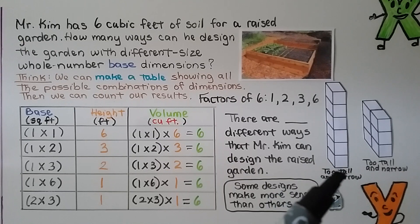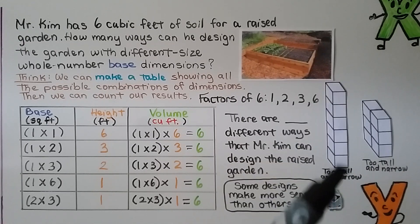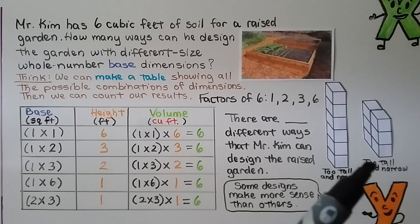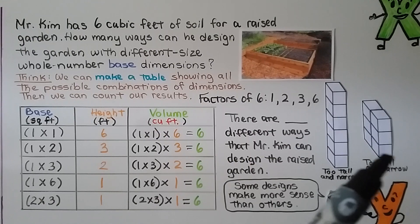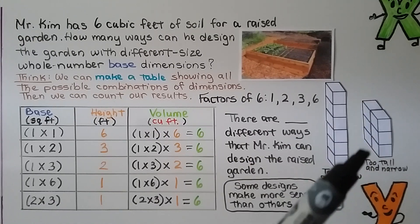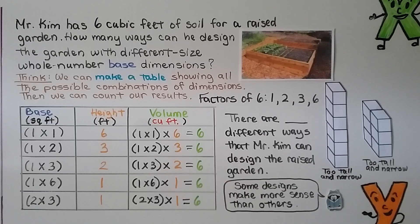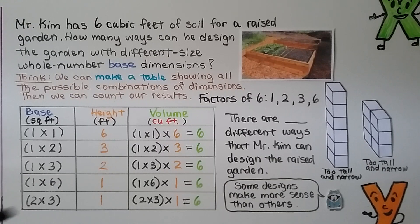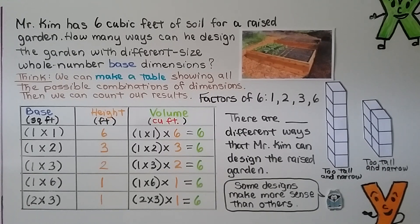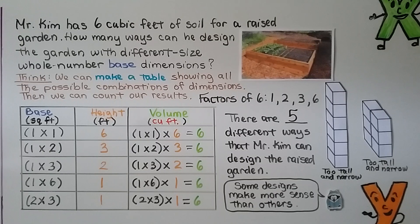A 1×1 base with 6 feet high would be too tall and narrow for a raised garden, and even 1×2 with 3 feet high wouldn't be reasonable. So some designs make more sense than others. Counting all the ways: 1, 2, 3, 4, 5 — there are 5 different ways Mr. Kim can design the raised garden.